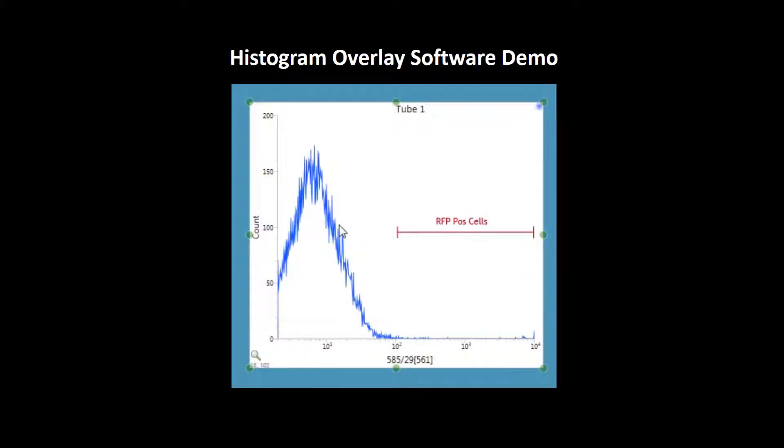What I am going to do is overlay the RFP positive histogram on this plot. You can see the histogram plot, this red region, and this is my RFP positive cells. This is the histogram overlay plot which you can use to show your fluorescence shift and for other purposes also. Thank you.